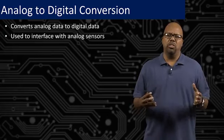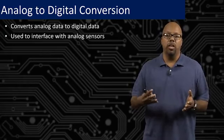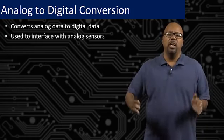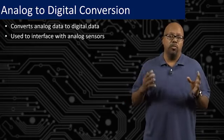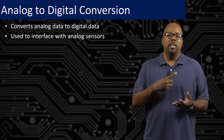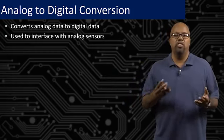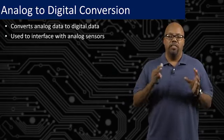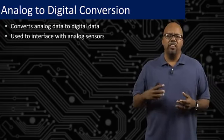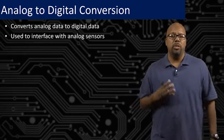Real numbers are continuous — there's an infinite number of real numbers between 0 and 1: 0.5, 0.6, 0.7, whatever fraction you can think of. Integers, however, can only be 0, 1, 2, and so on — no fractions. Between 0 and 1 there's just integer 0 and integer 1, a finite and much smaller number. That difference between real numbers and integers is the same as the difference between analog and digital.